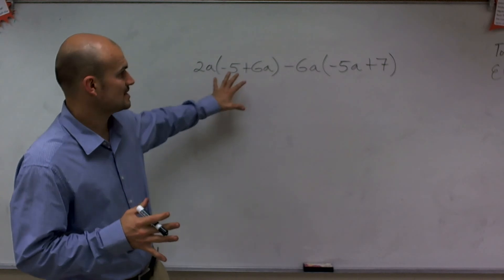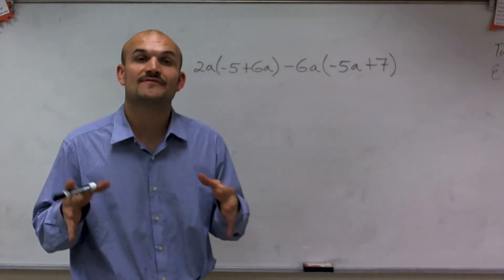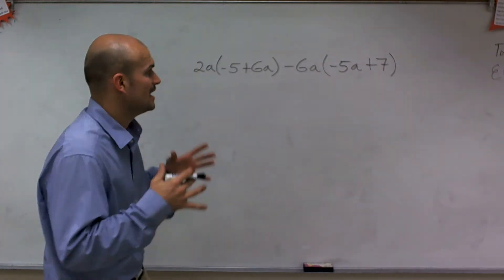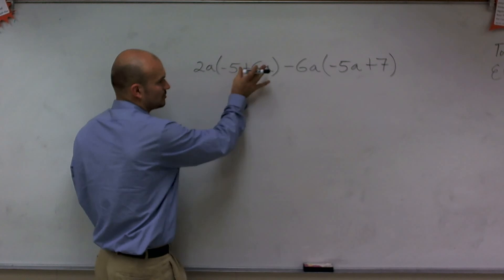So the first thing we need to do is I notice I see parentheses. Automatically, when I see parentheses, I always look to see if I can apply the distributive property. And you apply the distributive property when you have a term being multiplied by your parentheses.